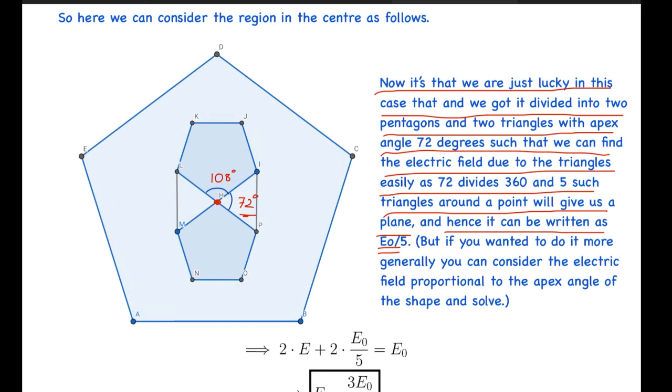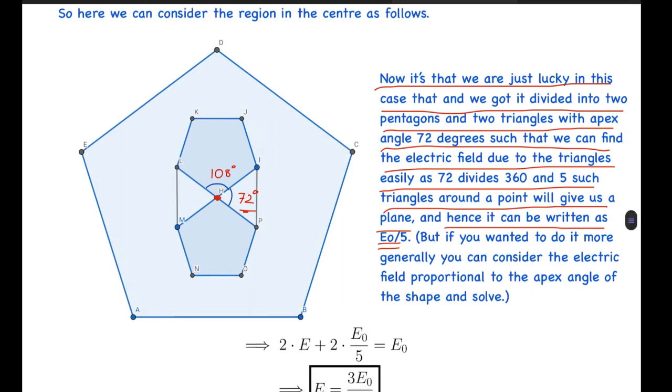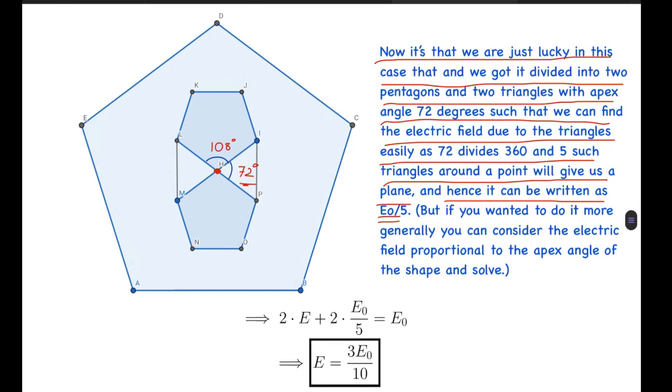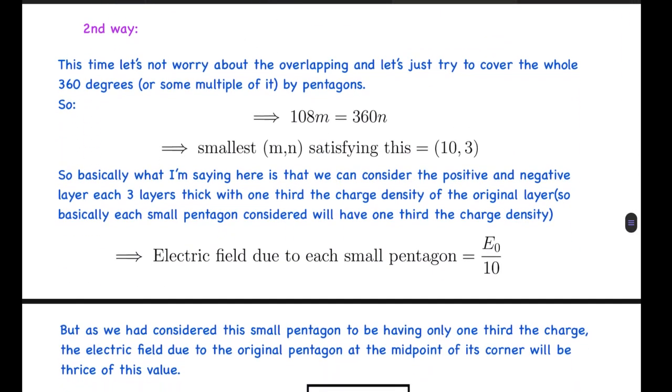You can think more about it, but I have just solved it here in this way. Assuming the electric field due to the pentagon to be E at the corner, and as we know that of the triangle plate it is E₀/5, and all of them are in the same direction, they must add up to E₀. Solving this gives us the value of E to be 3E₀/10. So this was one way to tackle the problem. Another way is